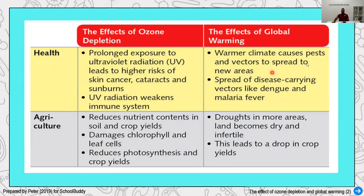In case of global warming, many pests will spread because warmer temperatures attract them to warmer areas. We're going to have a lot of spread of vector-carrying organisms — dengue caused by a virus and malaria caused by parasites, both carried by mosquitoes — which thrive in certain warm temperatures. In certain aspects of agriculture, soils become nutrient-poor, chlorophyll in plants is damaged, photosynthesis stops, and crop yield is always reduced, affecting both consumers and producers.